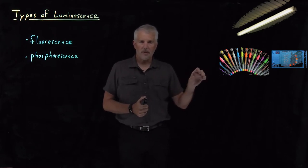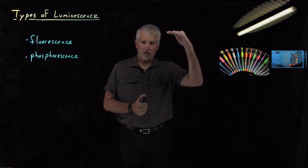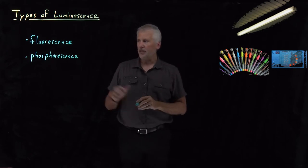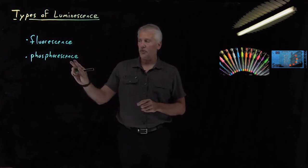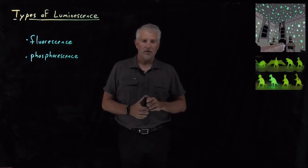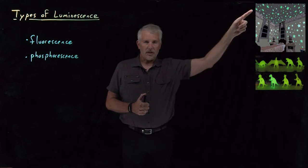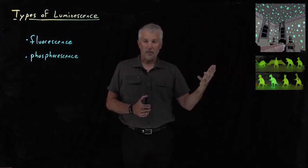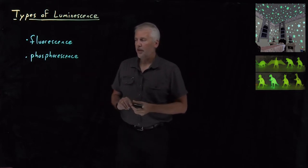We know they fluoresce because if we turn off the source of energy that's exciting the molecules, then the glowing stops immediately. And that's because that's a very rapid process that's not spin-forbidden, as opposed to phosphorescence. Glow-in-the-dark stars on a child's bedroom wall or plastic glow-in-the-dark toys that you have to charge up in the light, glow for a few minutes after the light is turned off. Those are phosphorescent.